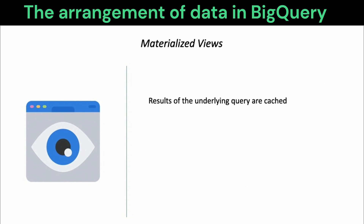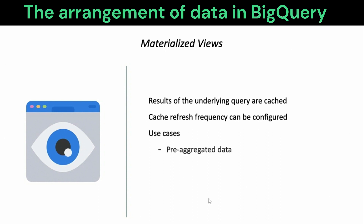A query against a materialized view is a query against that cached data. We can configure exactly how frequently this cache needs to be refreshed to avoid feeding users of the materialized view stale data. Some use cases include pre-aggregating data so that the aggregation need not be performed on the fly, and we can simply retrieve them as is from the materialized view.